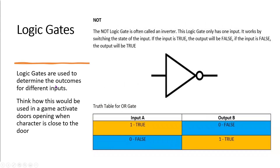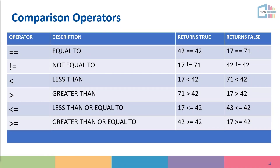The last logic gate — which usually confuses most people but is probably the easiest — is the NOT gate. The NOT gate is basically an inverter: whatever you put in it reverses. If you input true it outputs false; if you input false it outputs true. Think about how this would be used in a game — for example, activating doors that open when a character is close. When the character is near the door, input is true and the door opens; when they're not there, it closes. We use these gates in combination to meet the requirements of the game.